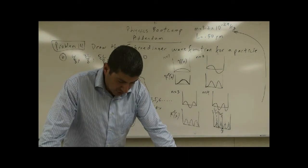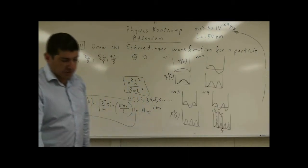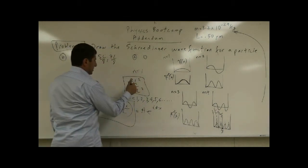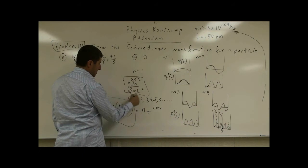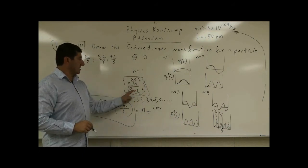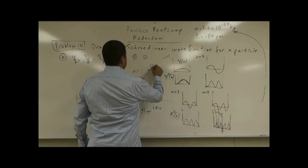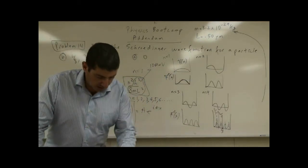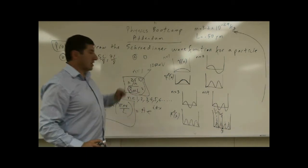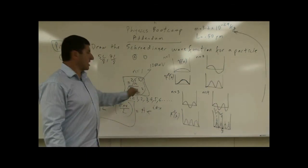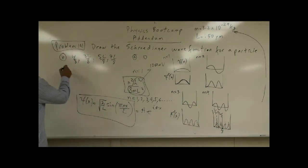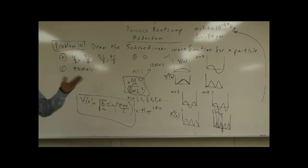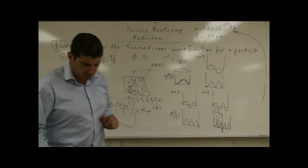Part C: if the energy of the ground state equals 10 mega electron volts, what is the energy of the third state? Remember the energy scales as n squared. For n equals 3, 3 squared is 9, so 9 times 10 mega electron volts gives 90 mega electron volts. Those are pretty quick questions.